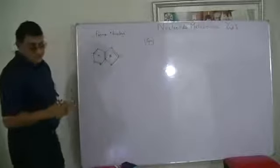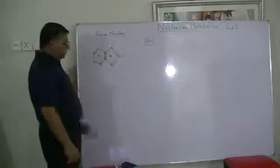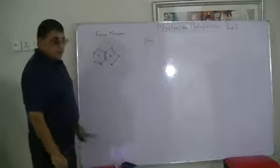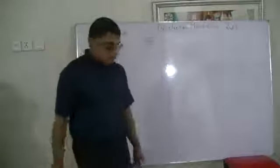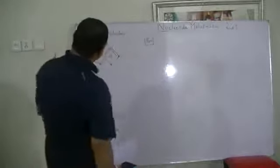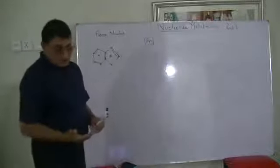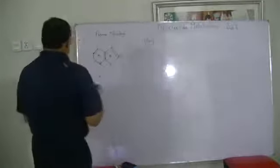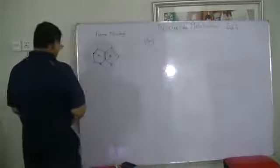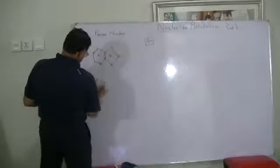This is how the purine nucleus is numbered — 1, 2, 3, 4, 5, 6, 7, 8, 9. This is purine. Now, how is it synthesized? The purine nucleus forms two compounds: adenine and guanine.